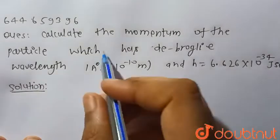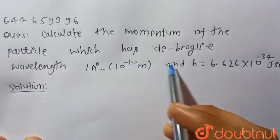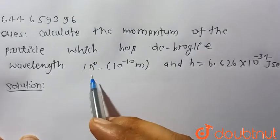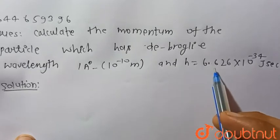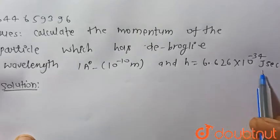Hello everyone, consider the given question. Calculate the momentum of the particle which has de Broglie wavelength 1 angstrom, that is 10 to the power of minus 10 meter, and Planck constant h is equal to 6.626 into 10 to the power of minus 34 joule second.